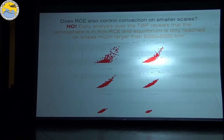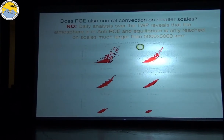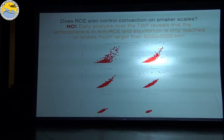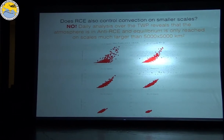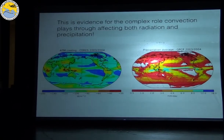We then ask: how much do we need to average before we find RCE? Going from 10×10 degrees to 20×20, 40×40, 60×60, and 90×90 degrees, by the time we reach about 90×90 degrees we approach a state close to radiative-convective equilibrium. So RCE is a useful concept but only on very large scales.